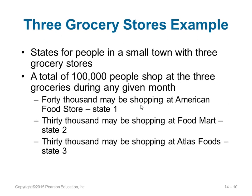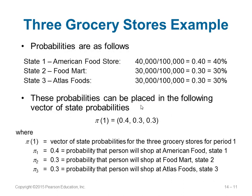Let us take a three grocery stores example. There are 100,000 customers during a month: 40,000 go to American Food Store (state 1), 30,000 go to Food Mart (state 2), and 30,000 go to Atlas Foods (state 3). The initial vector of state probabilities phi of 1 is 0.4, 0.3, 0.3, representing the probability that a person shops at each store.